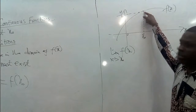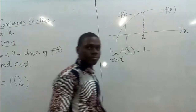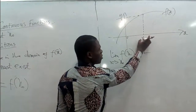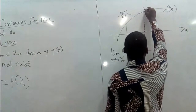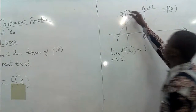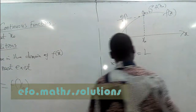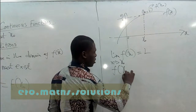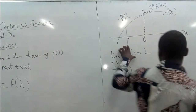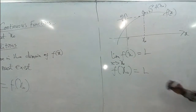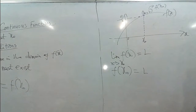As we move to X naught from the right, the function value is approaching F, and from the left we are also getting towards F. So the limit equals F. When we substitute X naught into the function, the coordinate is written as (X naught, L), where L equals F of X naught. So F at X naught is also equal to L. The third condition is satisfied — the limit of F of X as X approaches X naught equals L, and F of X naught also equals L. Therefore the function is continuous at this point with no discontinuity.